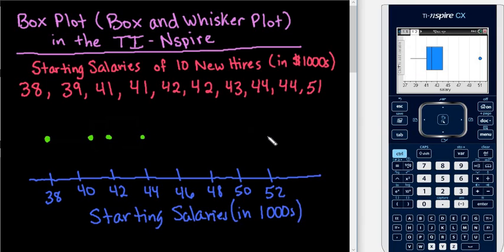And then we have an outlier at 51. So then what we would do is we would just draw our box around Q1 through Q3, and then draw a line where the median is, and then connect our whisker. And I'm not going to connect this one because this point is an outlier.